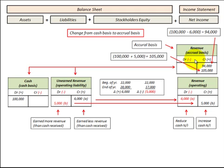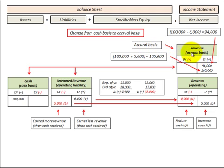Here we're going to convert our revenue and expenses from a cash basis to an accrual basis. We're going to do that by looking at our operating liabilities and our operating assets. Any changes in our operating liabilities or operating assets are going to be reflected in our revenue or expenses. We'll then take those changes and either add or subtract them from our cash basis, which will give us our accrual basis for either the revenue or the expense.